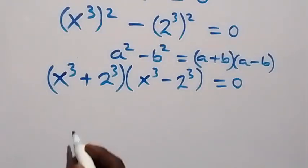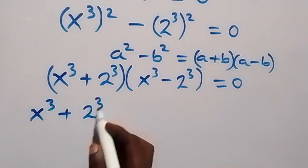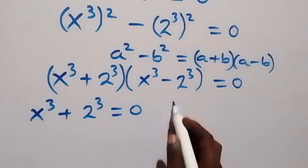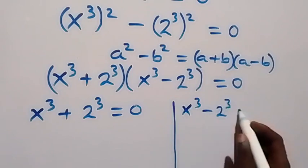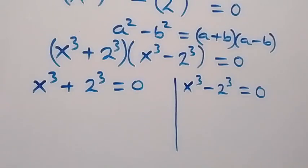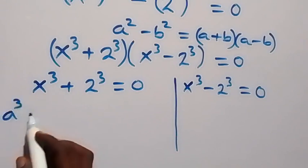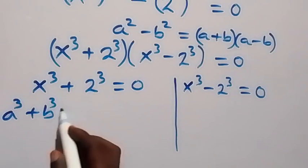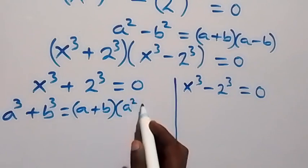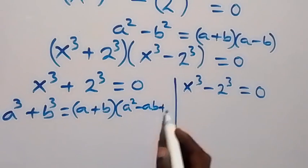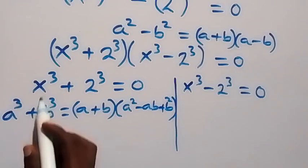So we have 2 possible cases. The first one: x raised to power 3 plus 2 raised to power 3 equals to 0. This follows the sum of cubes: a cubed plus b cubed equals a plus b, times the bracket a squared minus ab plus b squared. Here a is x and b is 2.